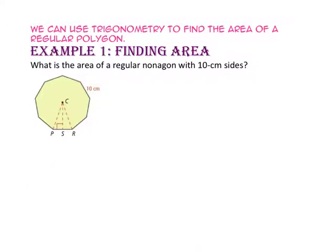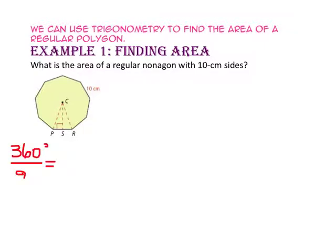We can use trig to find the area of a regular polygon. In example 1, we will find the area. What is the area of a regular nonagon with 10 cm sides? Since a nonagon has 9 sides, the radii of the nonagon create 9 vertex angles. So the measure of one vertex angle will be 360 degrees divided by 9, or 40 degrees.